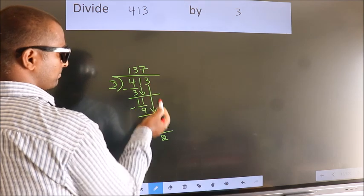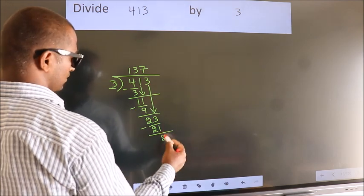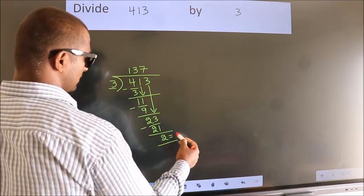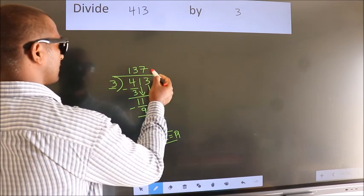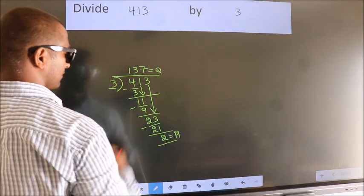No more numbers to bring it down. So we stop here. This is our remainder. This is our quotient. Here we go.